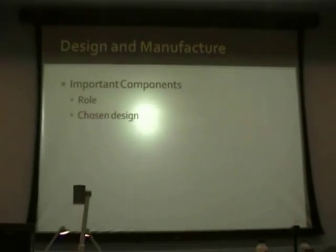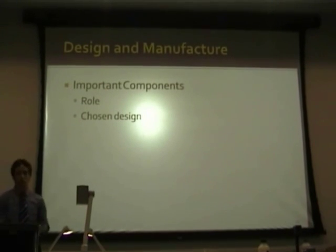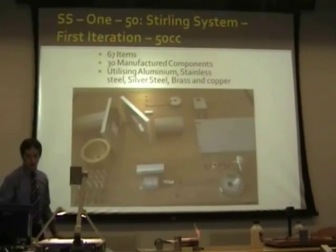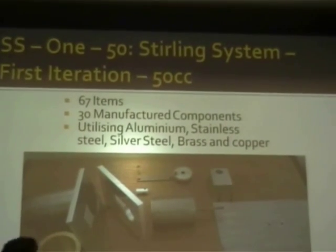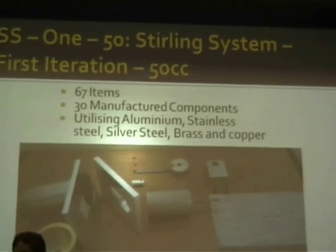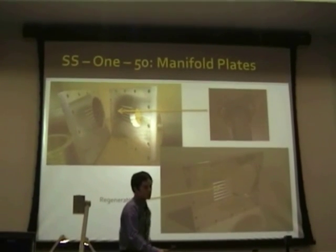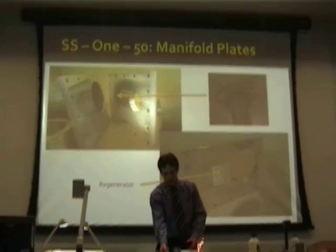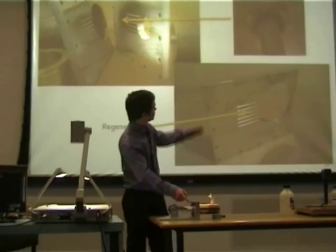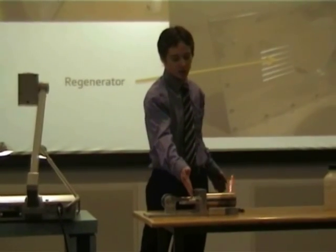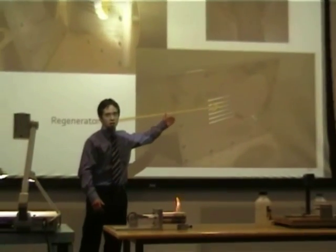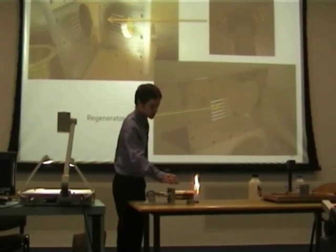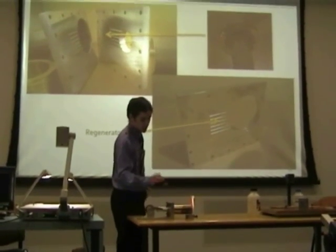On design and manufacturing, I want to talk about some important components. The build utilized materials such as aluminium, stainless steel, silver steel, brass, and copper. The manifold plates house the displacer assembly and the power assembly. They consist of a brass bushing to allow frictionless oscillation of the displacer piston, and also a regenerator made up of six slots which allows transfer of the working fluid from the displacer assembly to the power assembly.